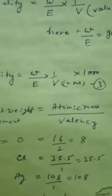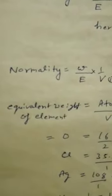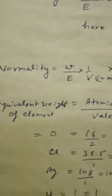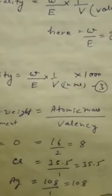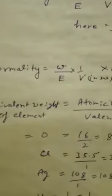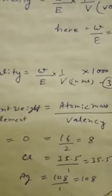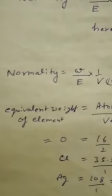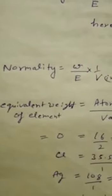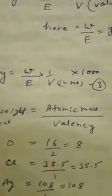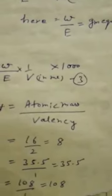Now the question arises: what is equivalent weight? It may be new for you. You have all studied about the atomic mass or atomic weight of an element. If we know the atomic mass of any element, we can find out the equivalent weight by the following formula: equivalent weight of any element equals atomic mass divided by its valency.